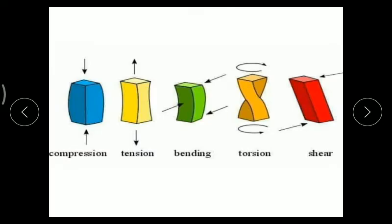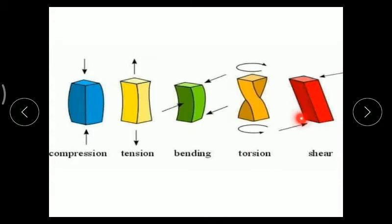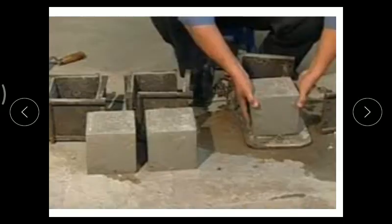Due to these loads, certain actions take place in the members. If a member is getting pushed, that action is known as compression. If a member is getting pulled, that action is tension. If a member bends, that action is bending. If the ends of the member are twisted, that action is known as torsion. Due to shear, one portion deflects in one direction and another deflects in the opposite direction.